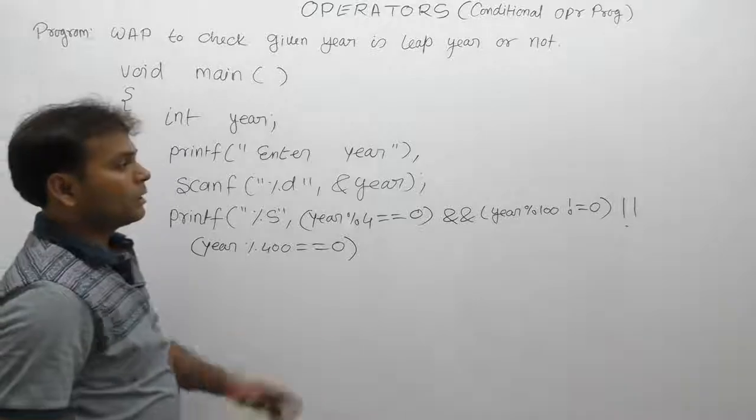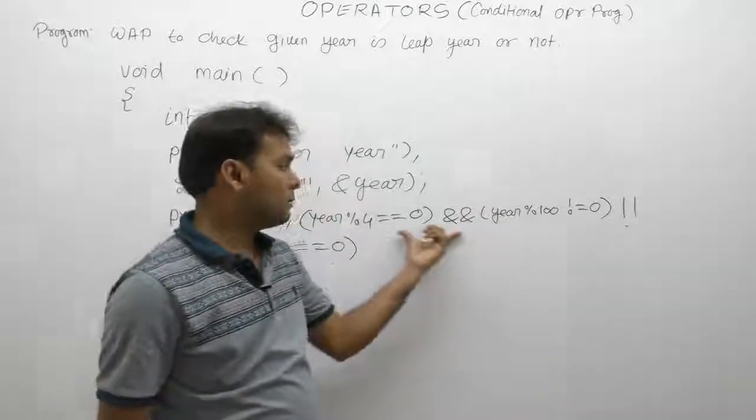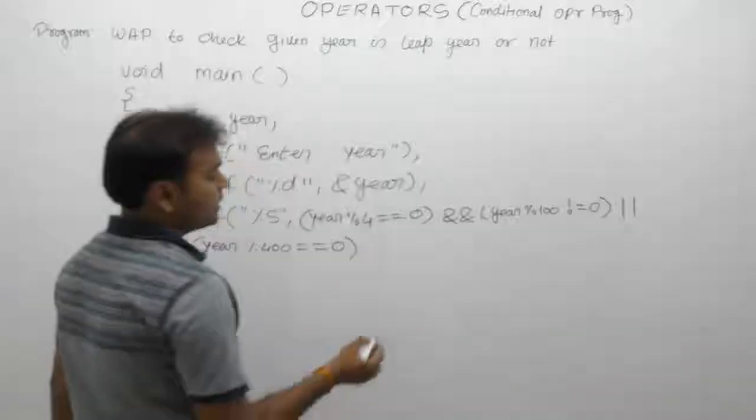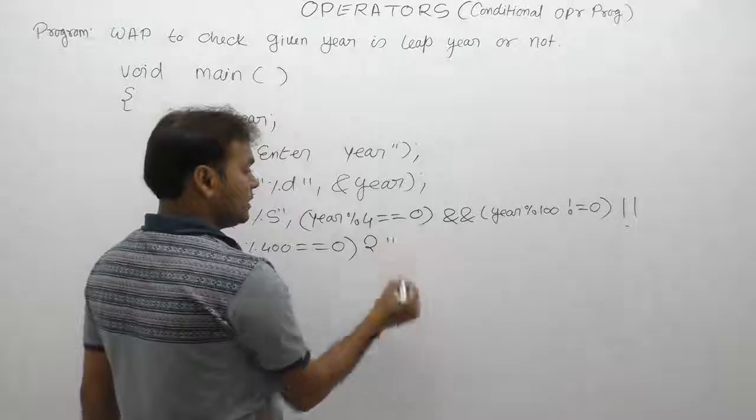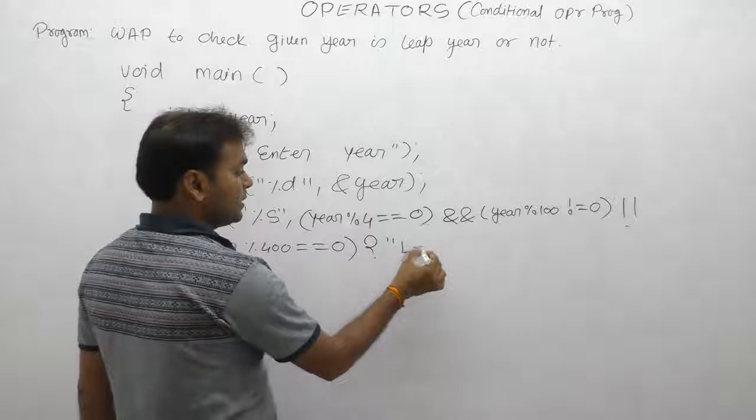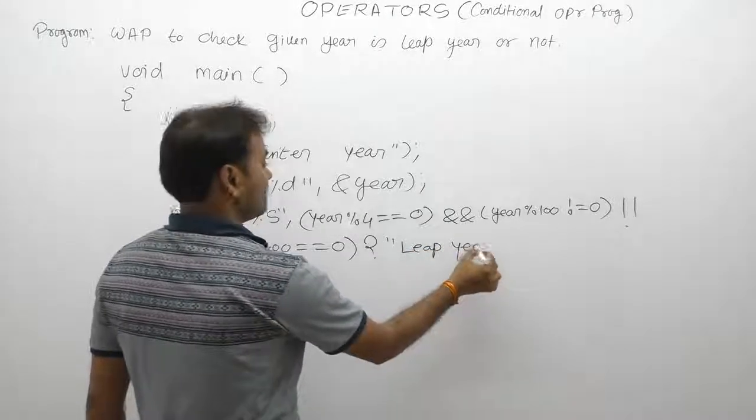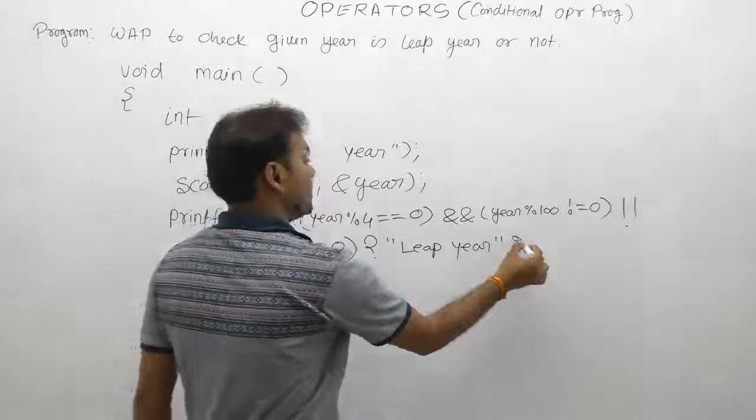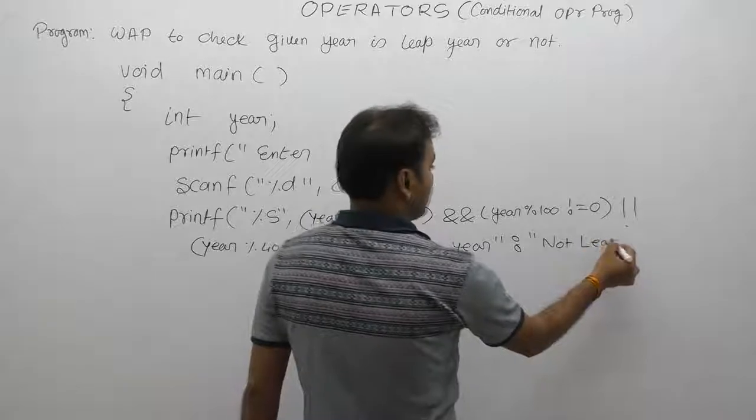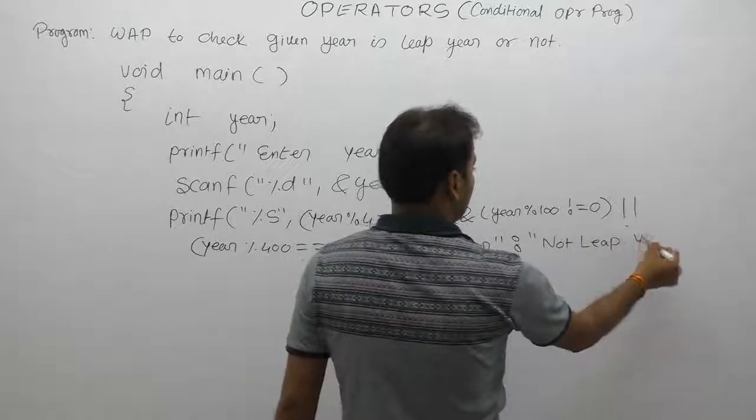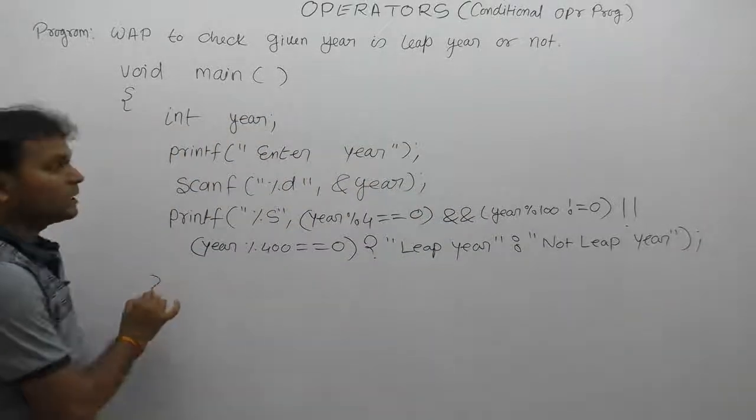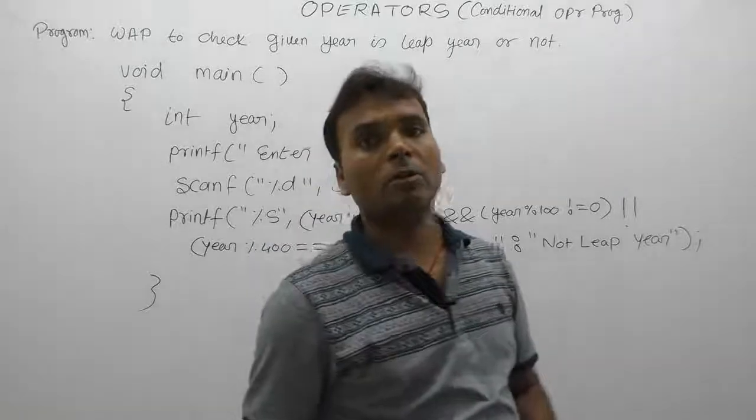If this condition is true, if any condition is true, then according to conditional operator we are displaying: yes, here is leap year. Otherwise message: not leap year, given year is not leap year. This is the closing of printf. This is the logic for testing given year is leap year or not.